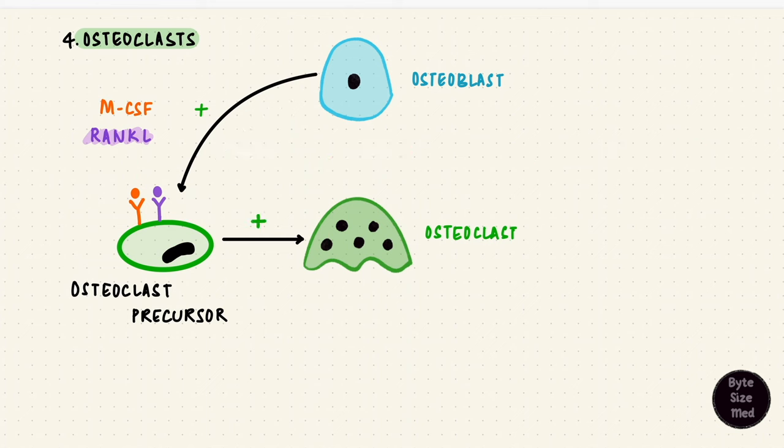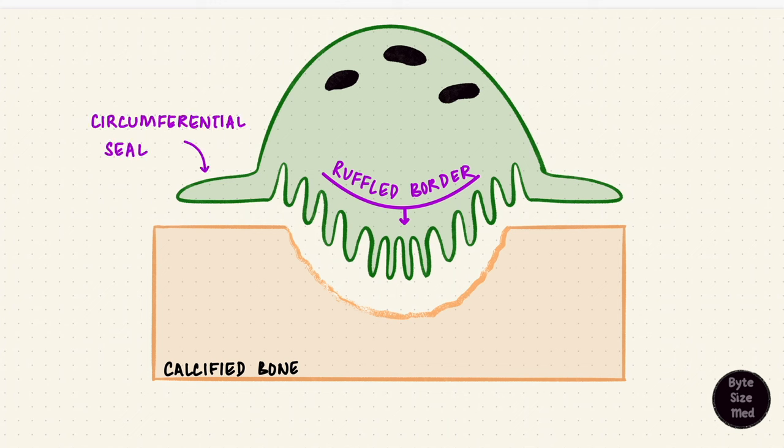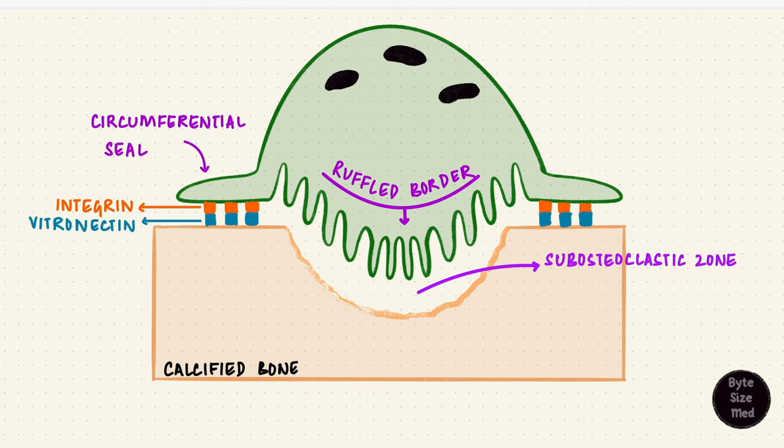Now what happens once the osteoclast is active? It has a ruffled border where it makes contact with the bone forming a circumferential seal. The attachment is mediated by adhesive glycoproteins. The integrins on the osteoclast bind to vitronectin on the surface of bone. The space beneath that border forms the sub-osteoclastic zone because it's beneath the osteoclast. The depression it creates as it digests bone becomes larger and larger. This depression where the osteoclast sits is called the Howship lacuna or the resorption bay.